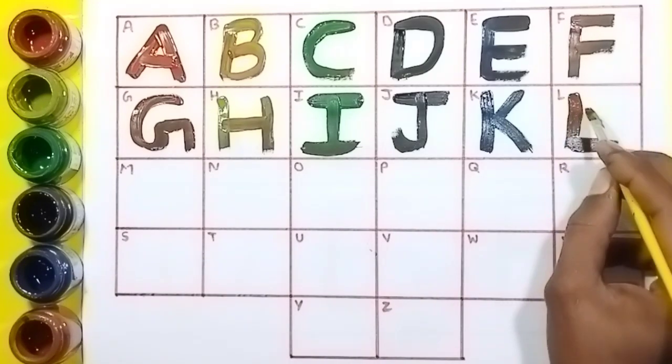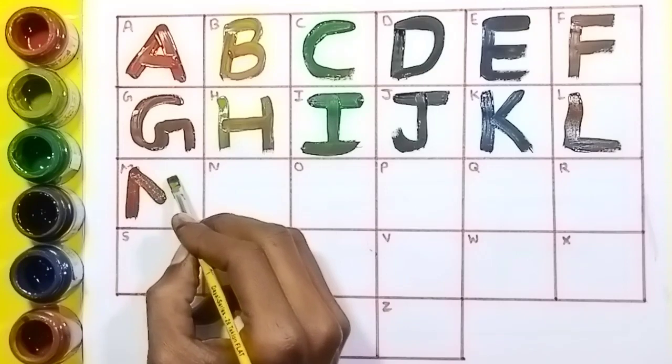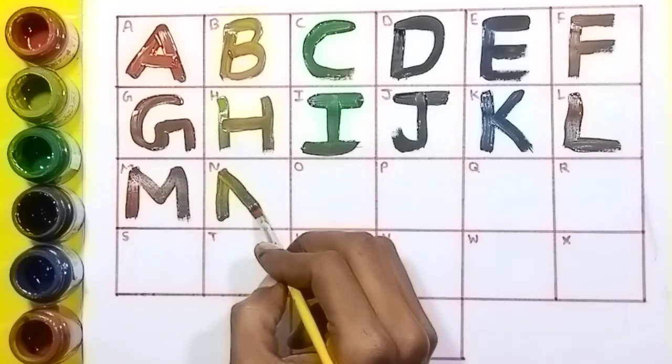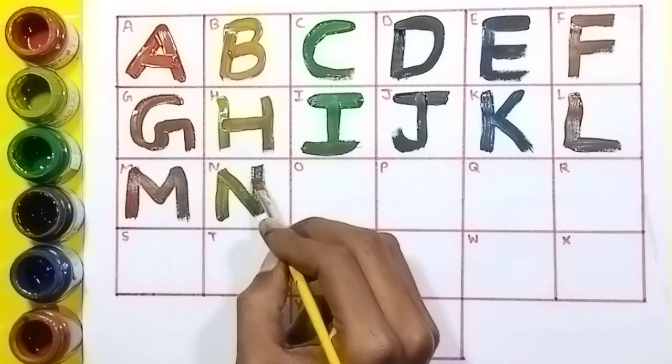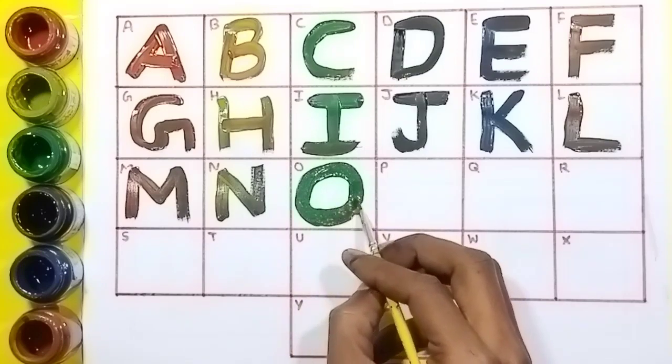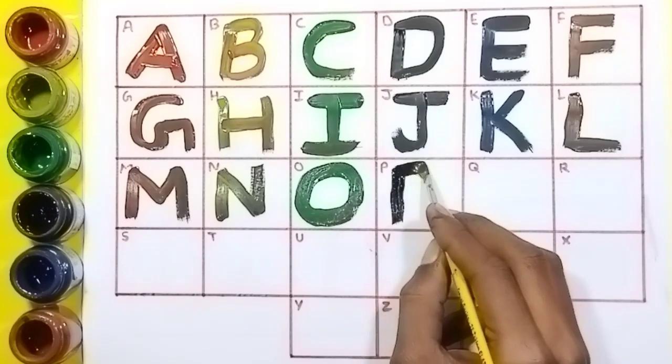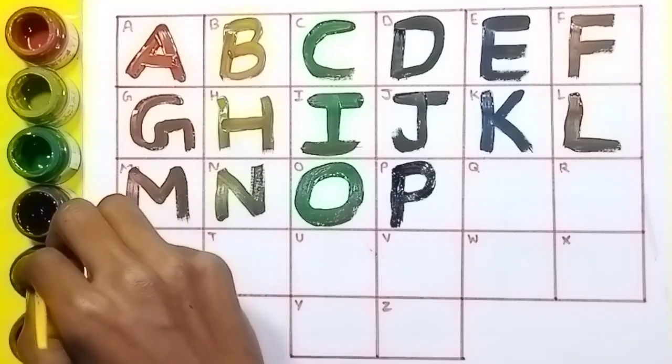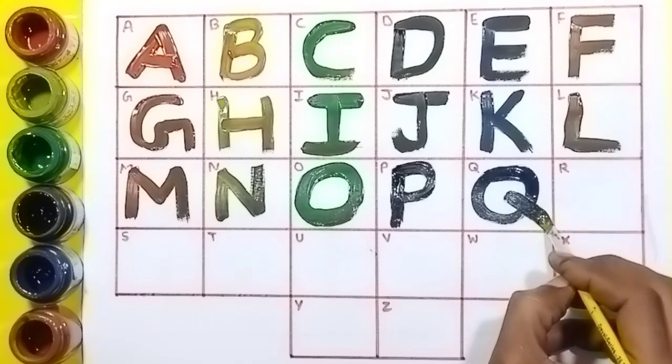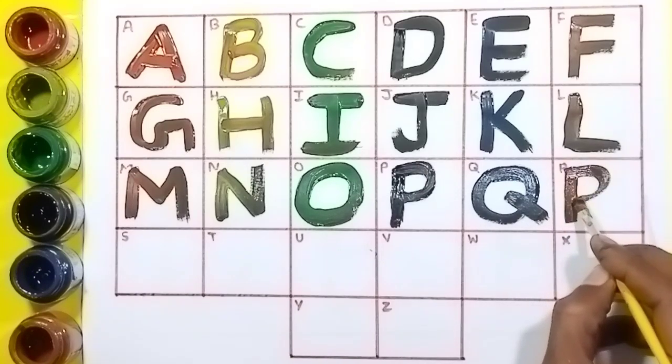Red color: M, M for mango. Yellow color: N, N for nest. Green color: O, O for owl. Black color: P, P for parrot. Blue color: Q, Q for queen. Brown color: R, R for rat.